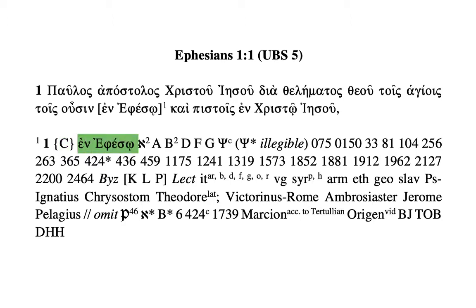Then you get the words themselves, signaling the evidence in support of the committee's decision to print 'ἐν Ἐφέσῳ.' The first witness is Aleph, but not the original hand — Aleph is Codex Sinaiticus, and the raised 2 means we're dealing with a correction, not the original hand. The original hand is signaled by an asterisk or star next to the witness.